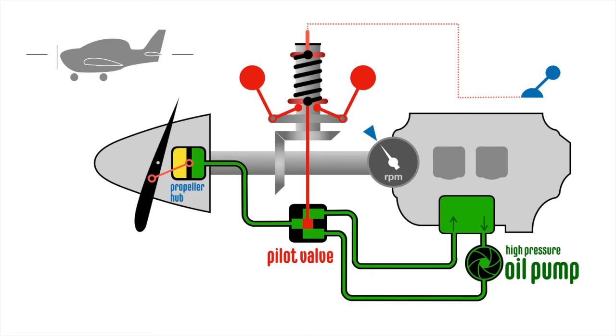Let's have a look at a couple of examples of how the constant speed unit works. This is a step-by-step breakdown of a process which happens quickly, continuously and automatically.